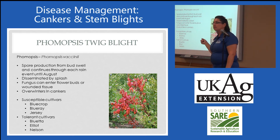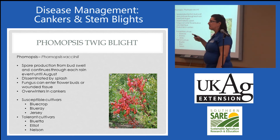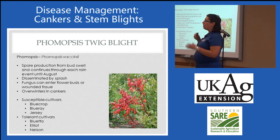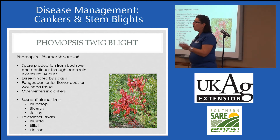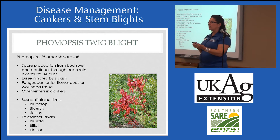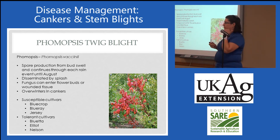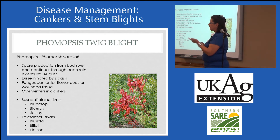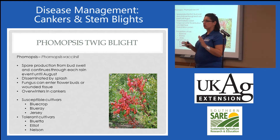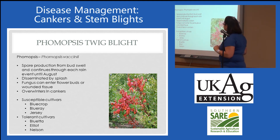This is another stress pathogen — it's opportunistic and loves stressed plants. On a good healthy plant you're really not going to see it. pH deficiencies are usually the first thing we tend to see it on, or our Phytophthora root rot survivors — those that are struggling along — we see a lot of this secondary disease.